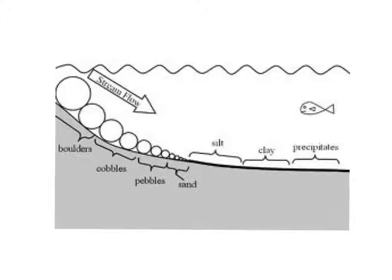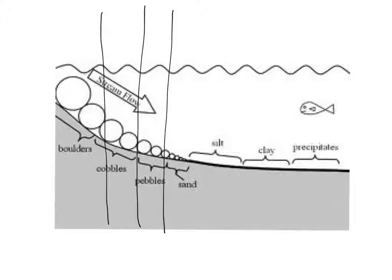Now remember gravel can be broken down into boulders, cobbles, pebbles and even smaller than pebbles but bigger than sand is granules, which is missing from this diagram. So as you look in this diagram in this section right here you're getting your bigger gravel which are boulders, then your cobbles, then your pebbles, then your granules which is missing from the diagram.